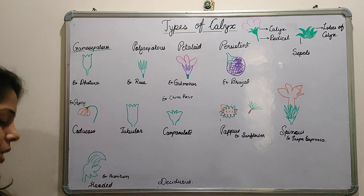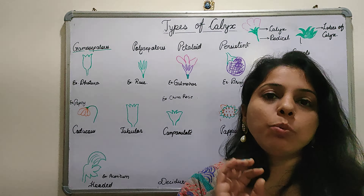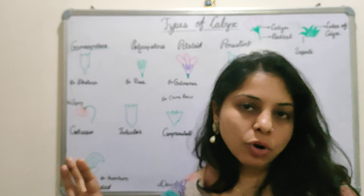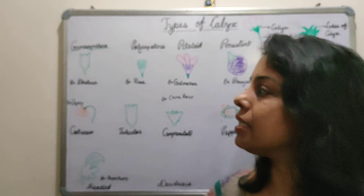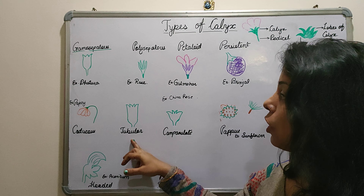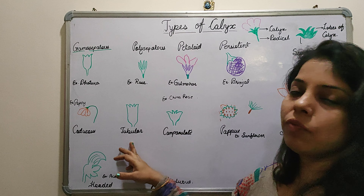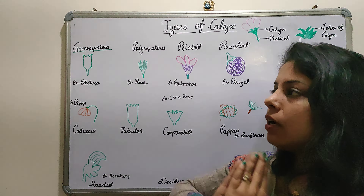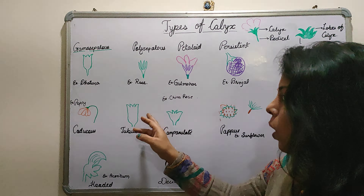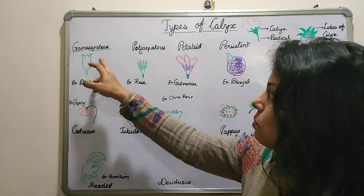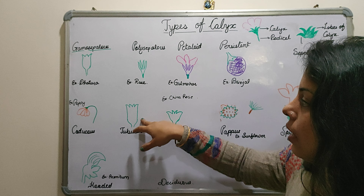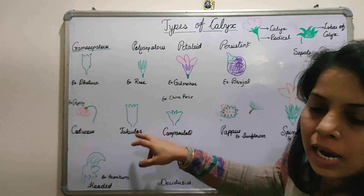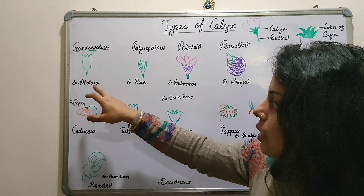This condition can be seen in poppy. Next, when sepals get fused and form a tube-like structure, it is called Tubular calyx. It is quite similar to gamosepalous, but it specifically forms a distinct tube-like structure. This condition can be seen in Datura.